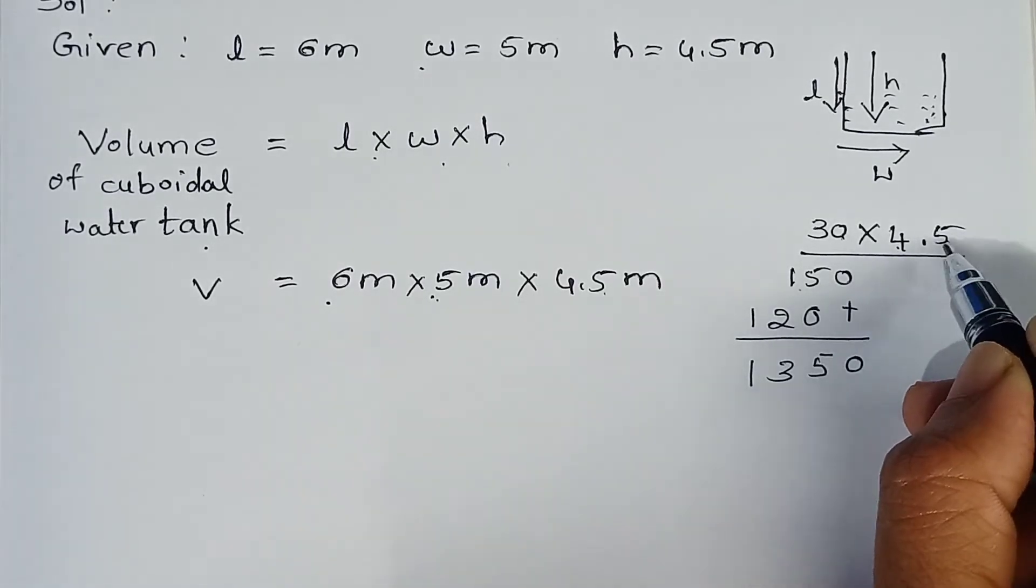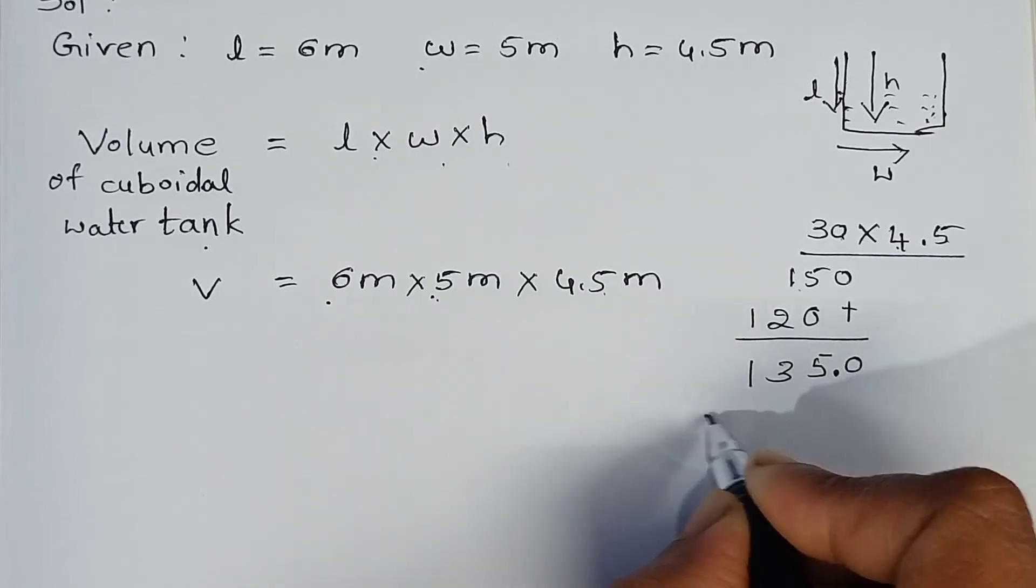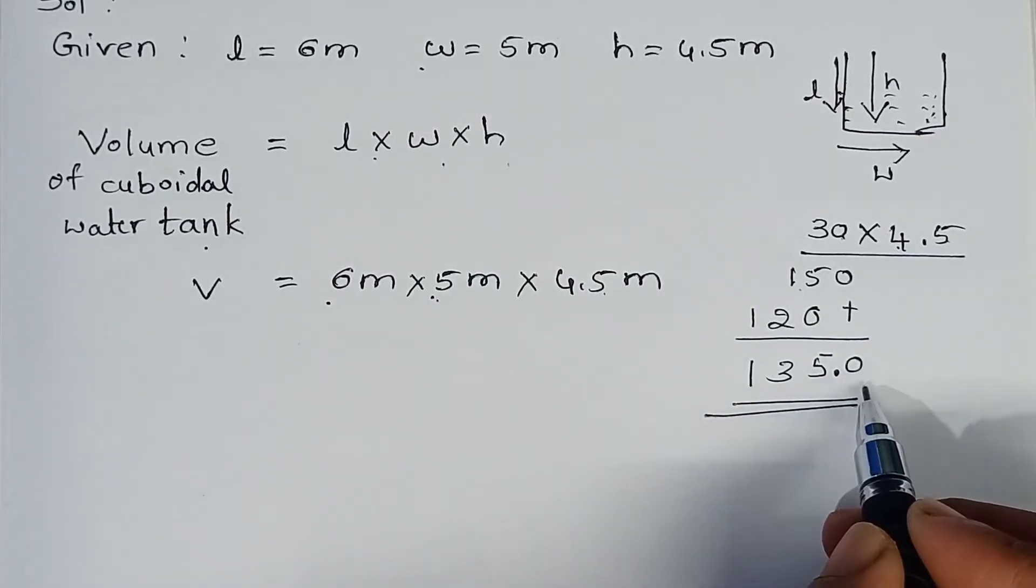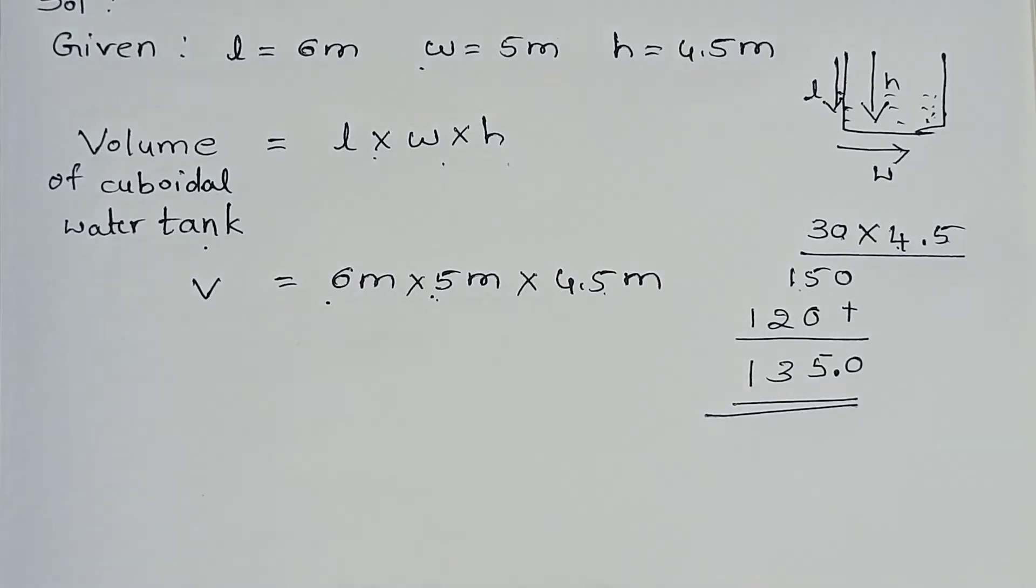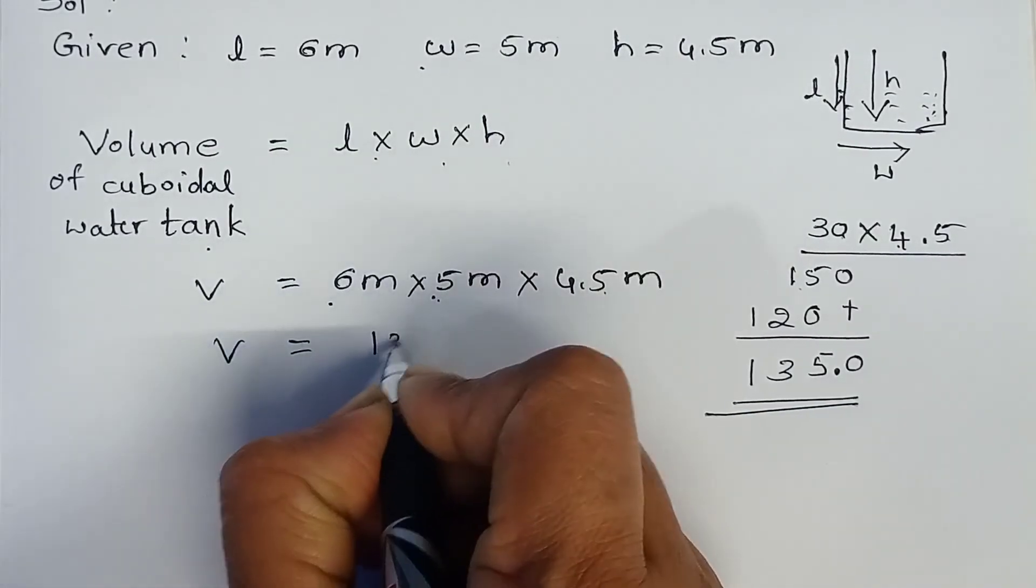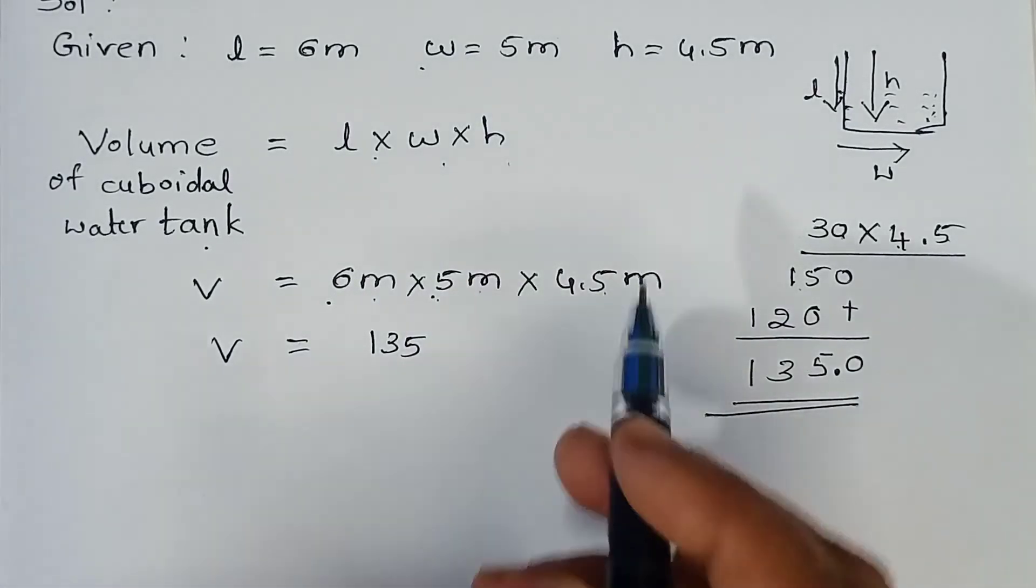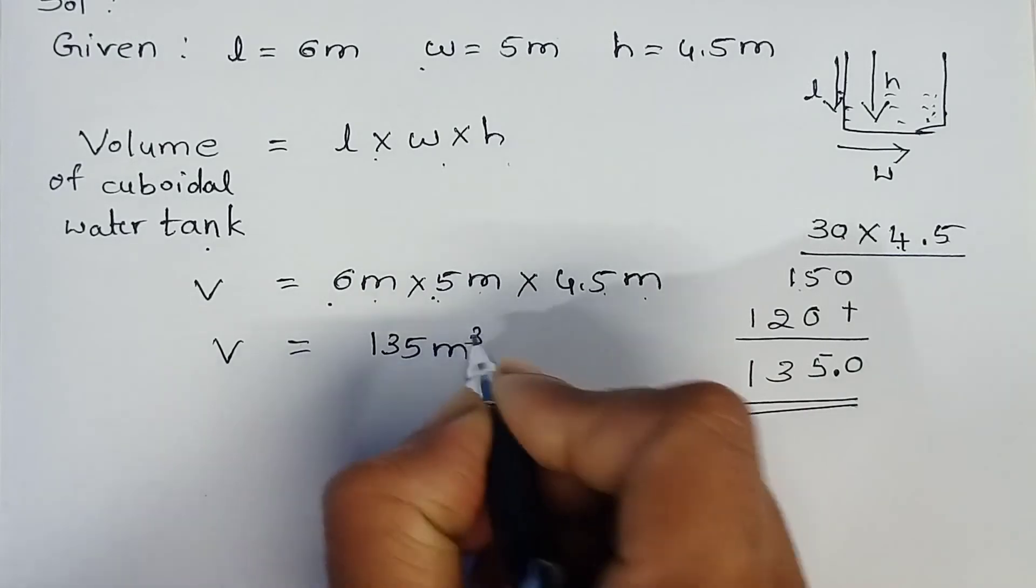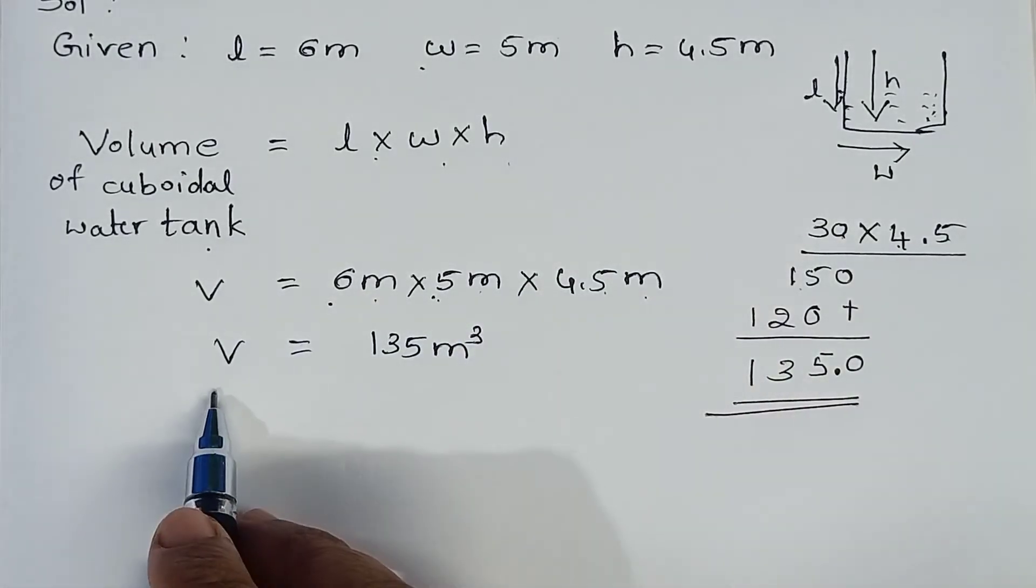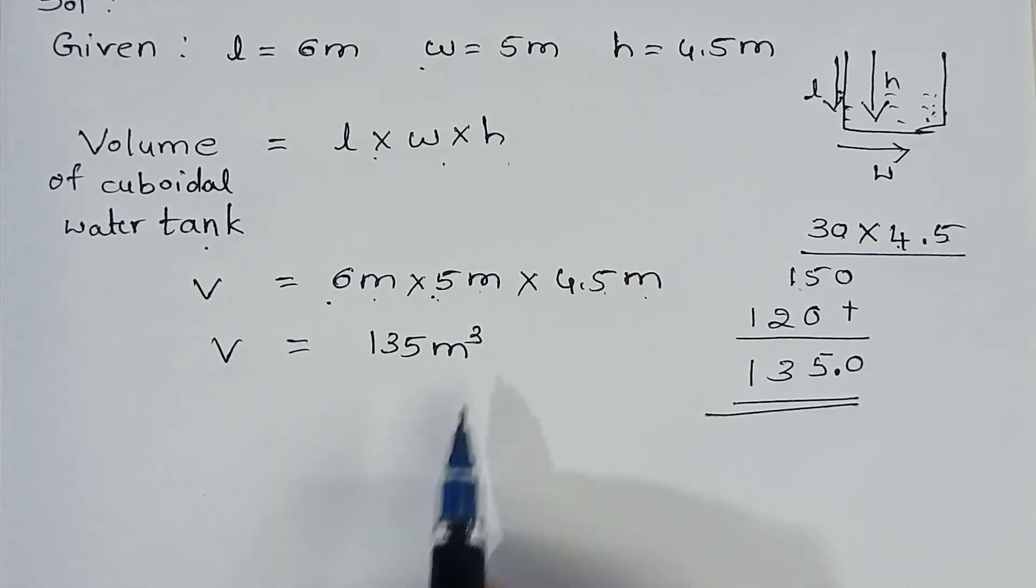After decimal point, 1 number is there. Therefore, I will put the decimal point here. It will become 135.0, nothing but 135. V is equal to 135 meter into meter into meter is meter cube. See here, volume of the cuboidal water tank is 135 meter cube.